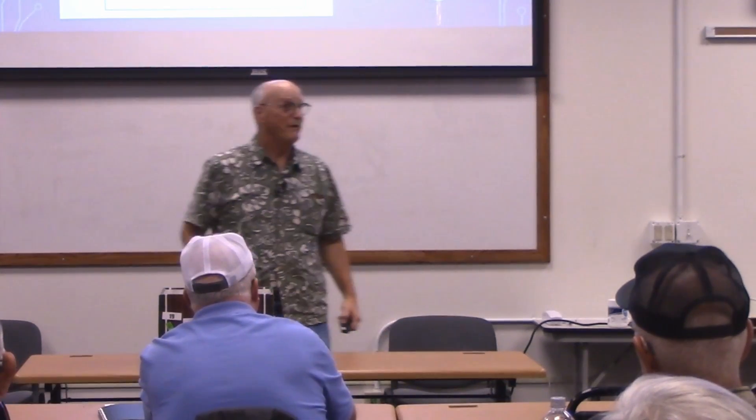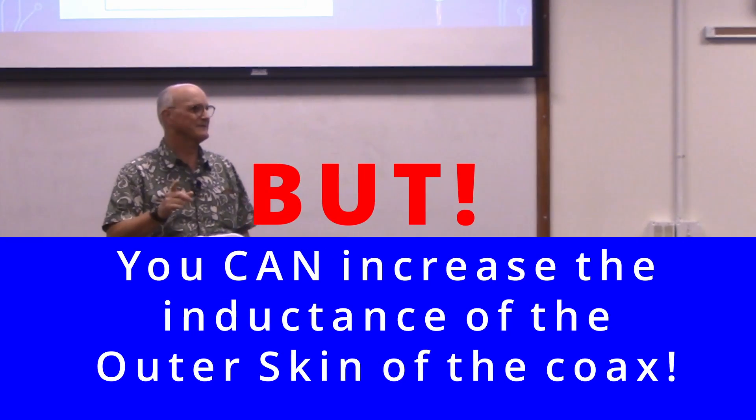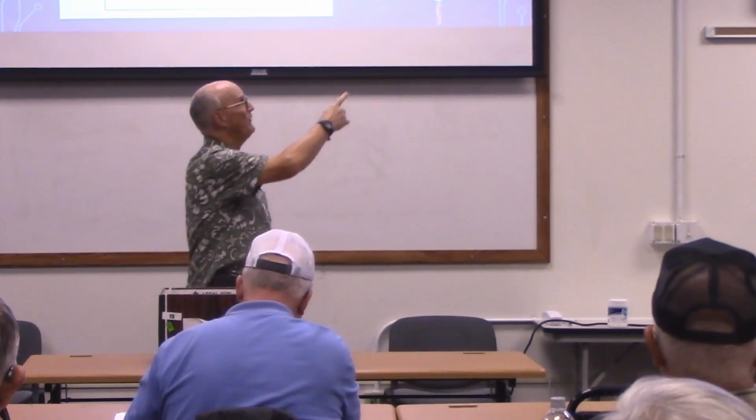The problem is we can't put a resistor in series with the outer skin of the coax - I don't know how you'd ever do that. And you can't put an inductor in series with the outer skin of coax. But you can increase the inductance of the outer skin of the coax. If we can do something to increase that inductance, it increases the overall impedance of the outer skin of the coax, and thus we current-limit our common mode current.